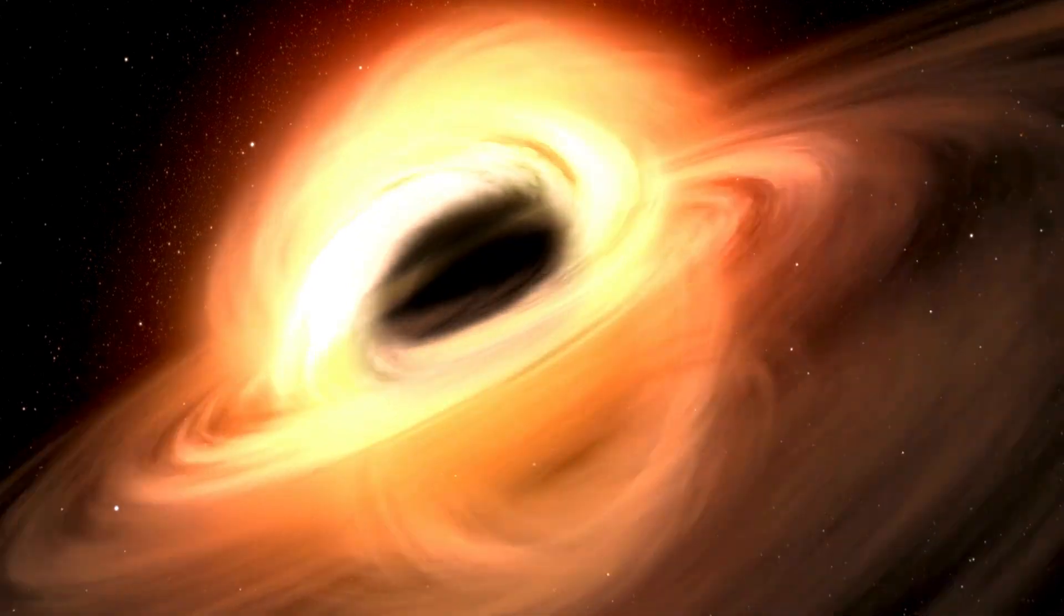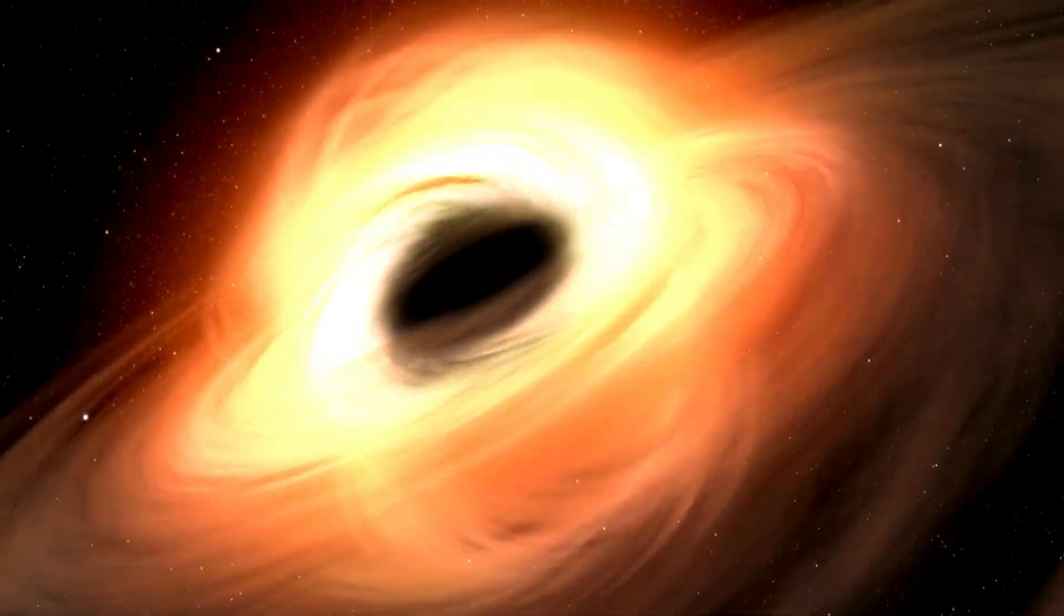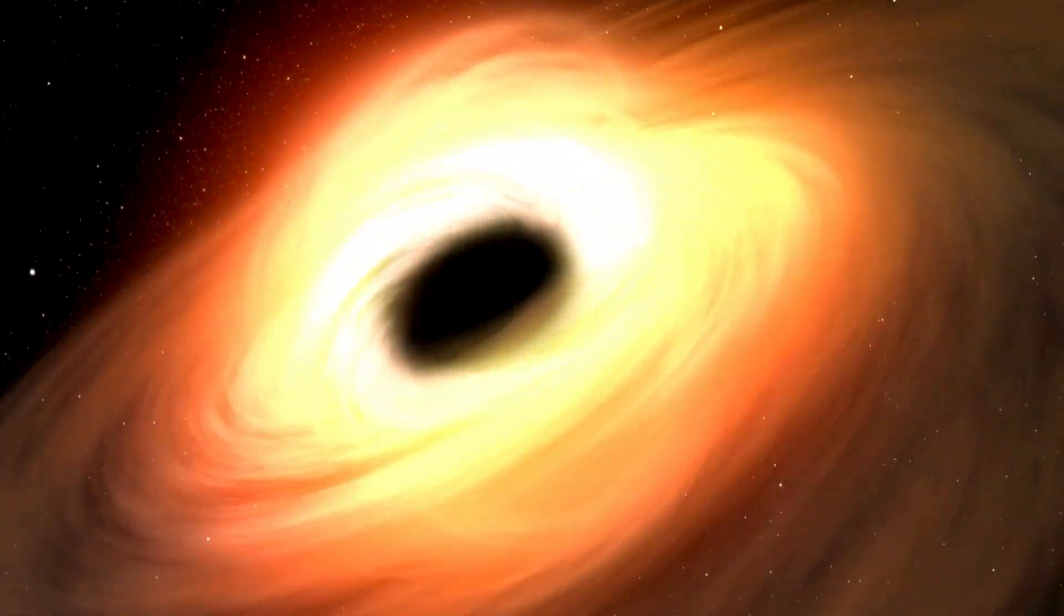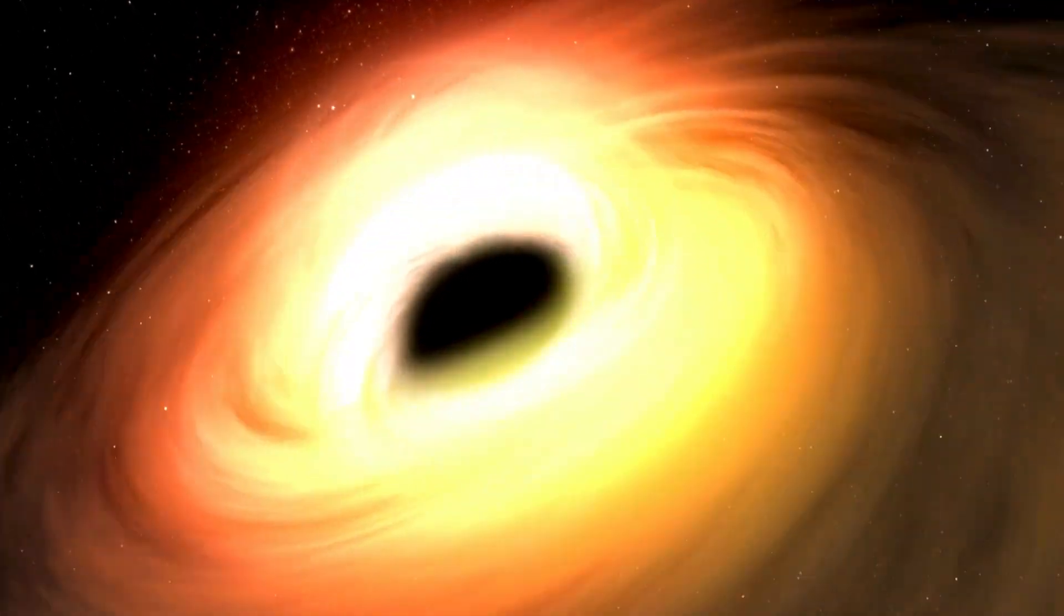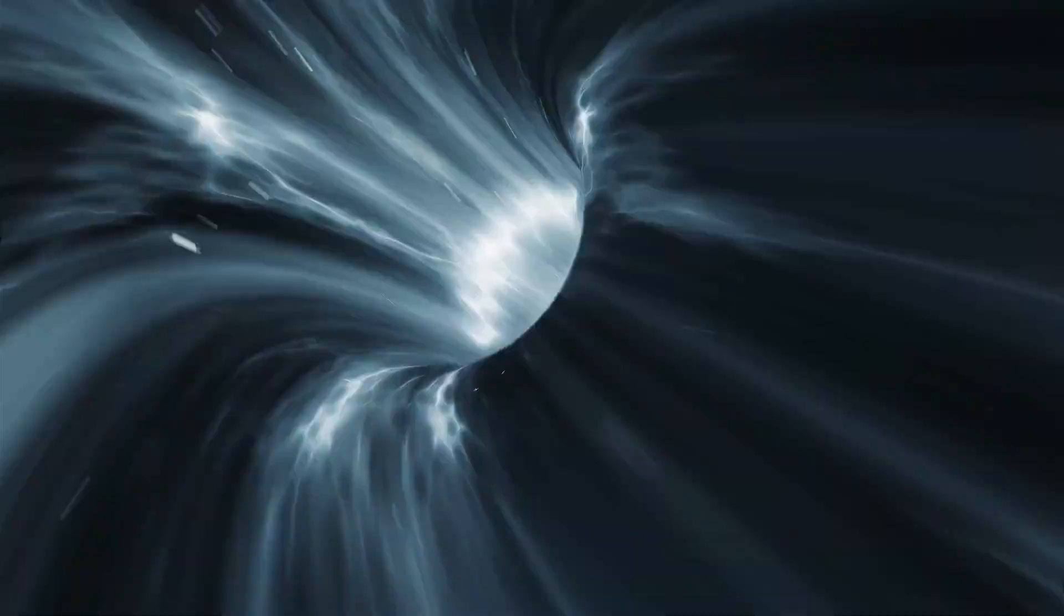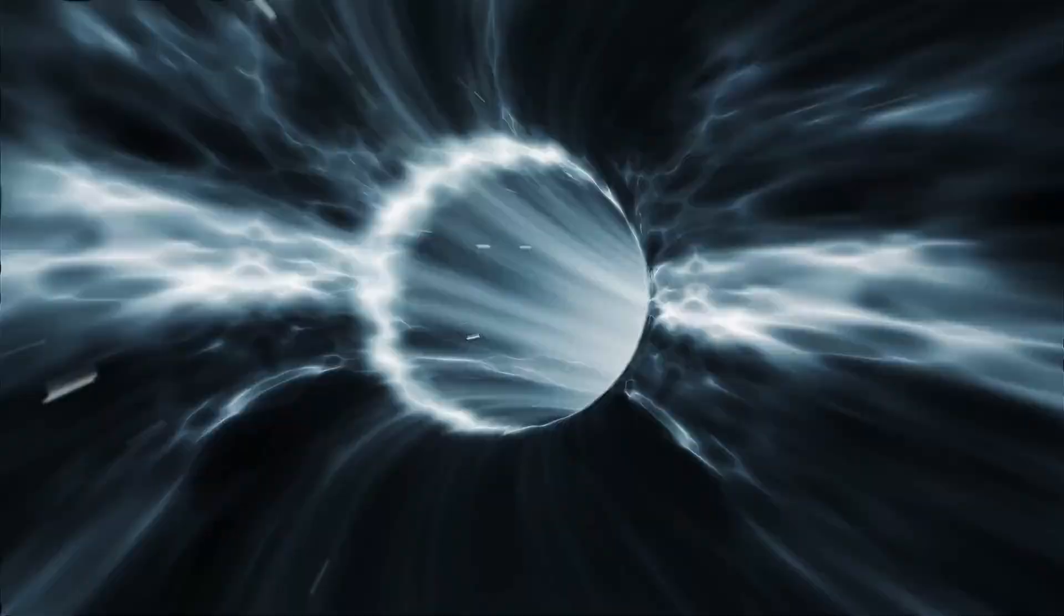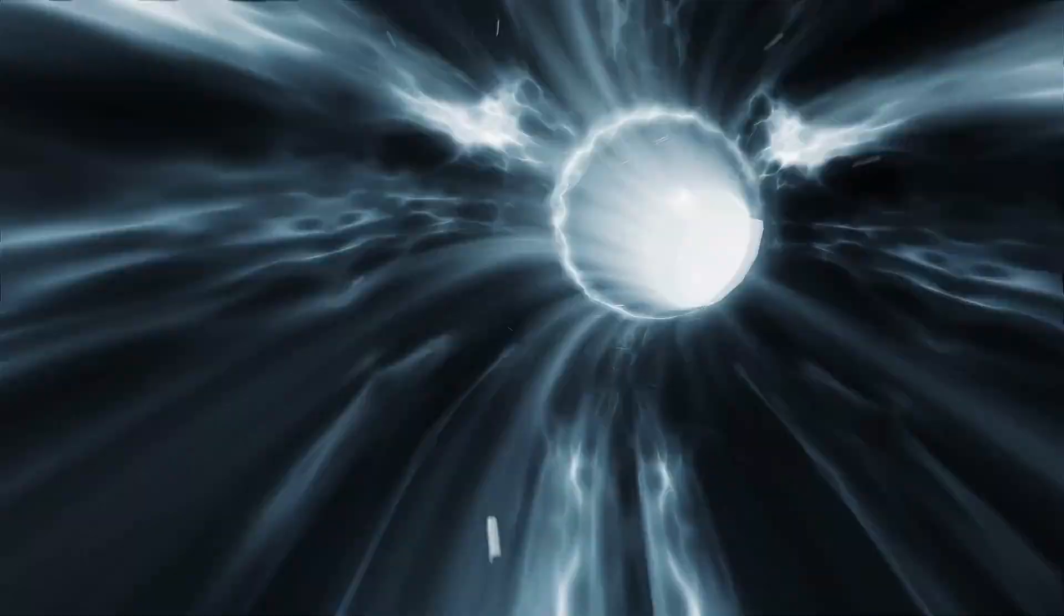It's part of a binary system, locked in a cosmic dance with a companion star. All black holes spin, but the fastest known is a speed demon. GRS 1915+105 spins at over 1,000 times per second. Just imagine the immense energy generated by this rapid rotation.